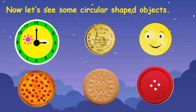Now look at the second picture. What is this, children? It is a coin, and it is also a circular shaped coin.